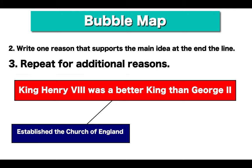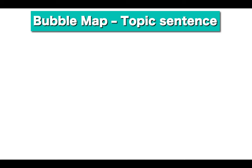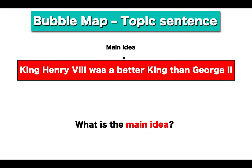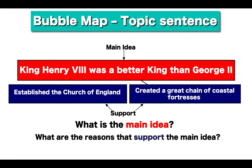Repeat for additional reasons. He created a great chain of coastal fortresses. So now, what is the main idea? The main idea is that King Henry VIII was a better king than George II. What are the reasons that support the main idea? He established the Church of England and created a great chain of coastal fortresses.